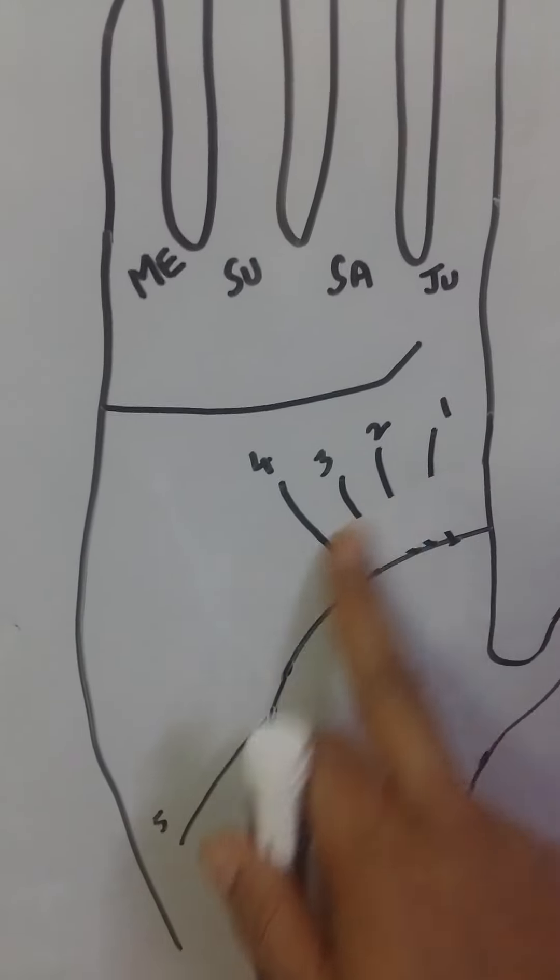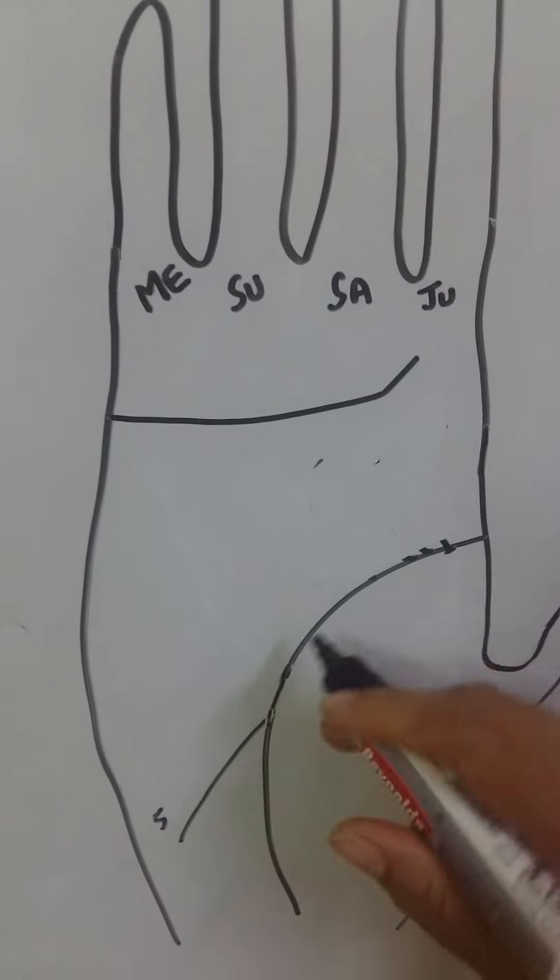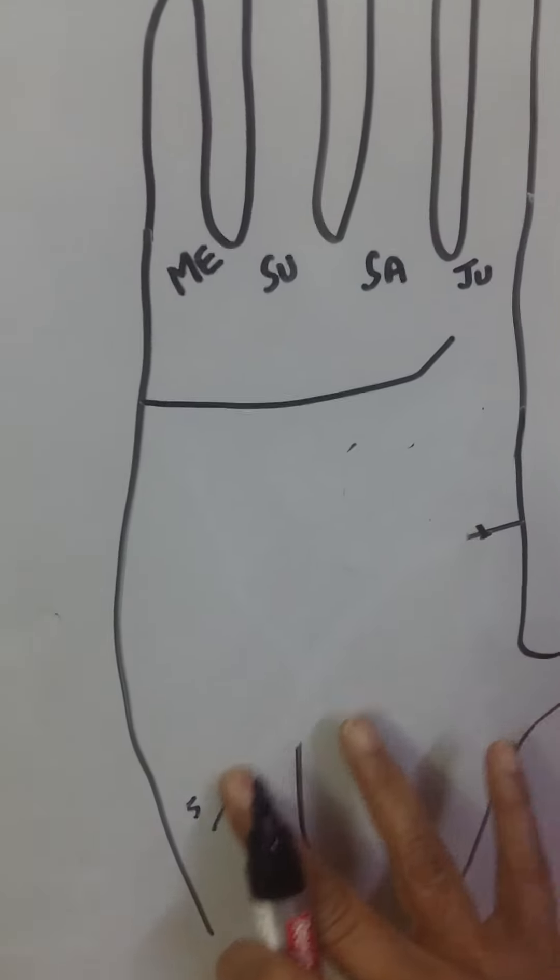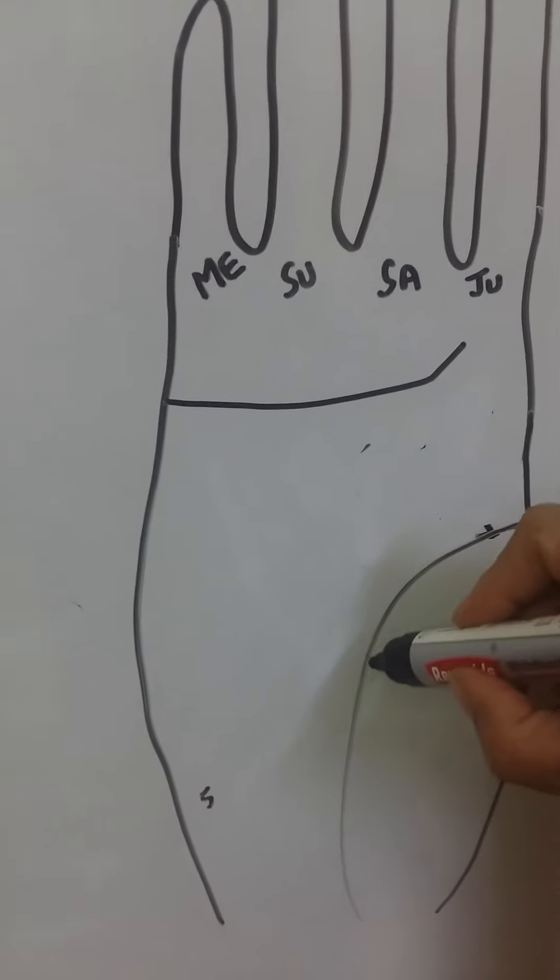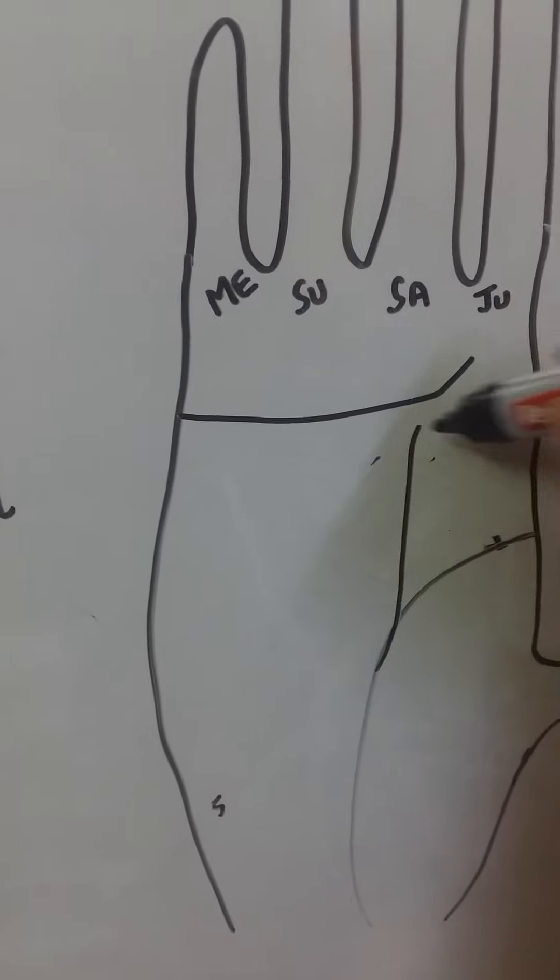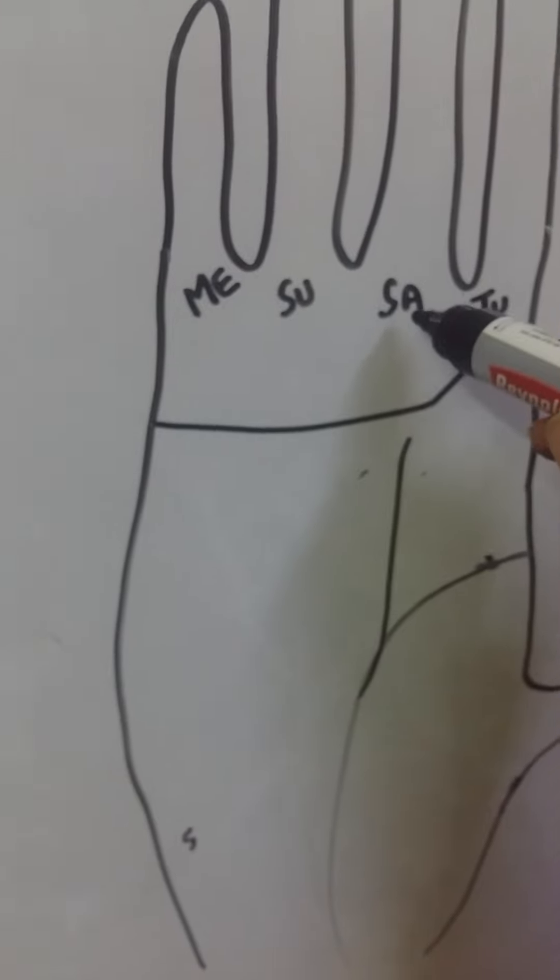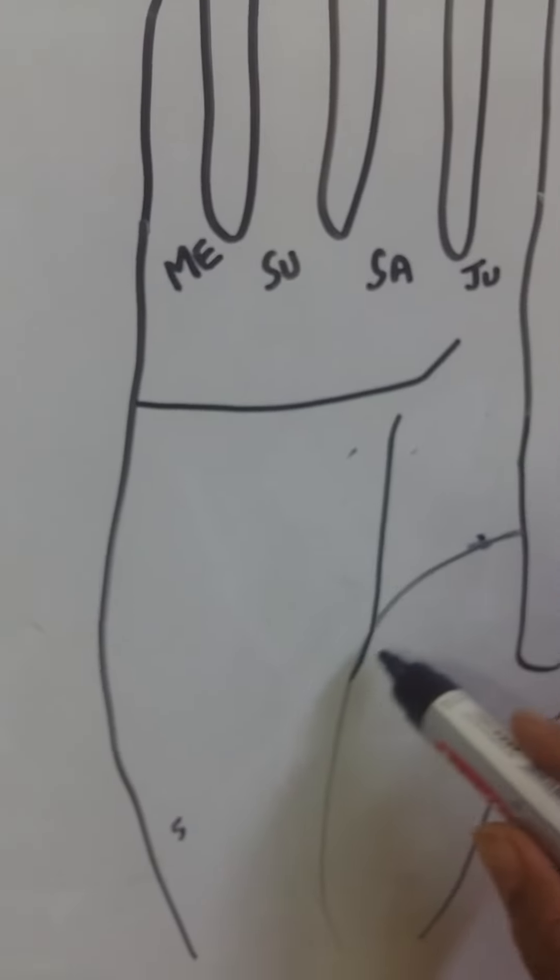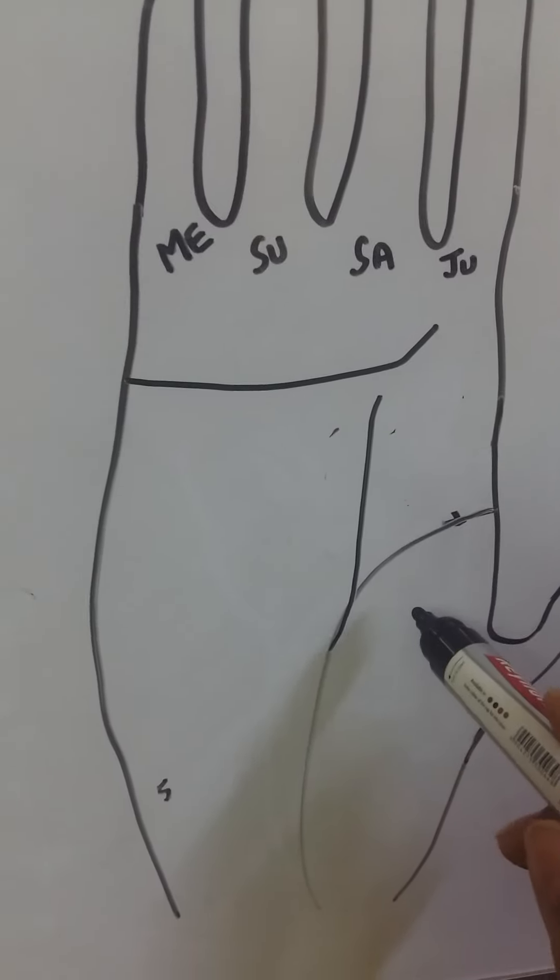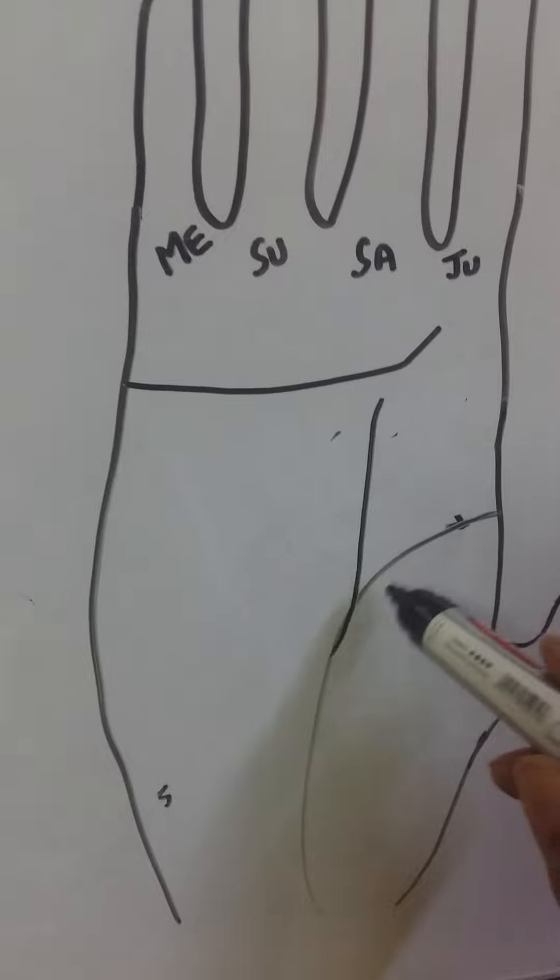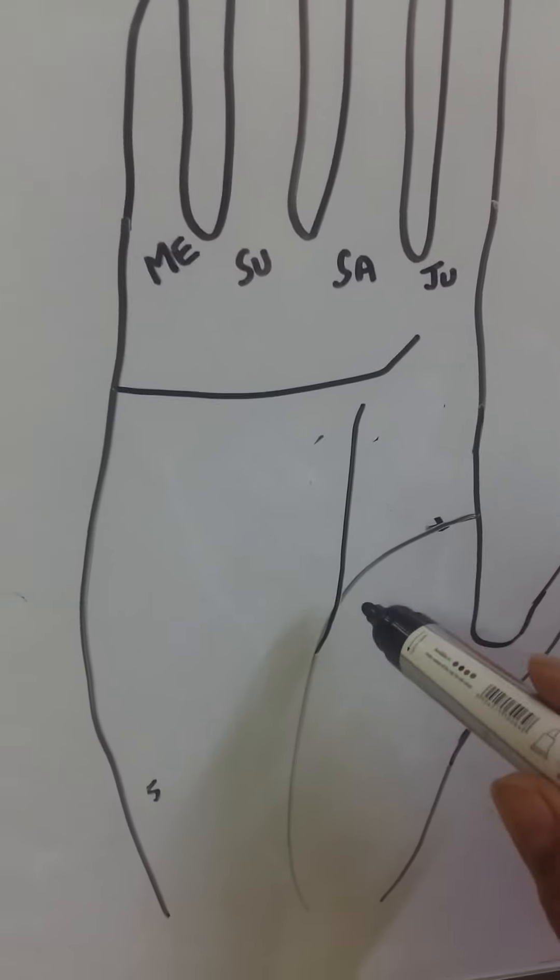Like, in some palms, we see line going like this. Such this line is going towards Saturn mound, pointing towards Saturn mound. This line is very auspicious line. Such persons are very hardworking and self-made person. So, such person will be very disciplined and very focused, and will do success by doing hard work.